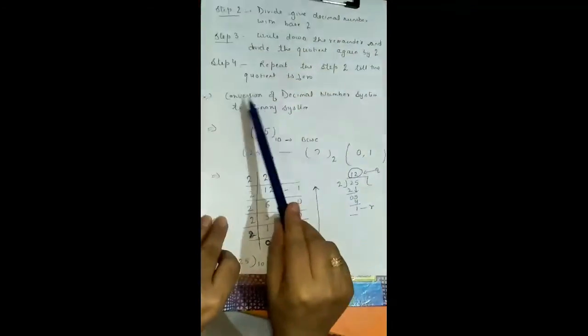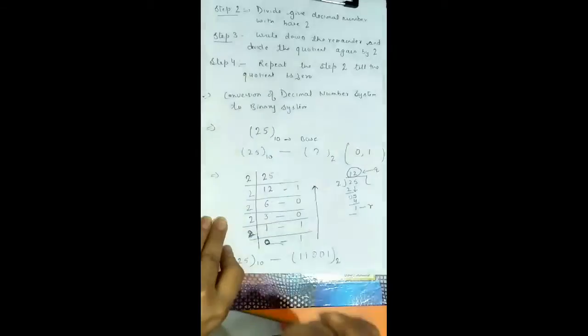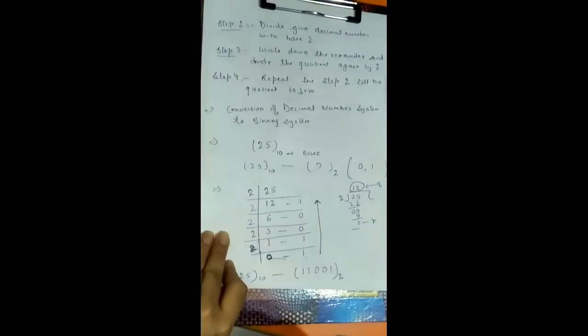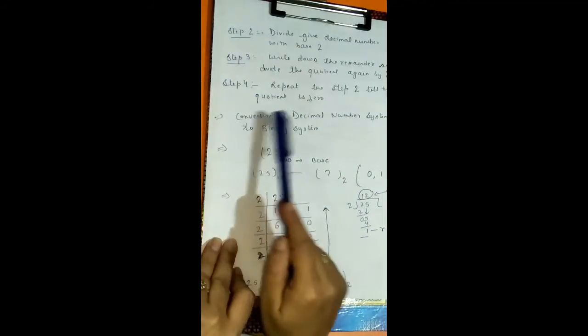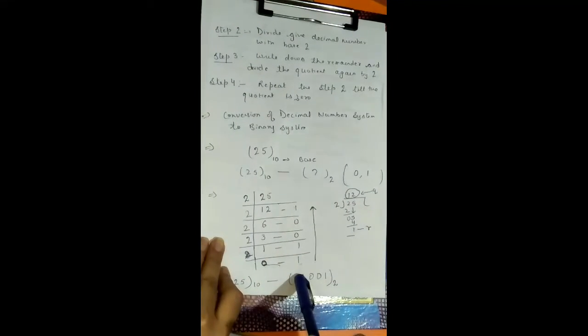This is the procedure to convert Decimal Number System into Binary Number System — a very important topic in the Number System chapter. First understand the basic concepts of both systems, then practice the conversion steps. The conversion of Binary to Decimal will be covered in the next session. Please do proper practice so you can easily convert decimal numbers to binary. Thank you, happy learning!